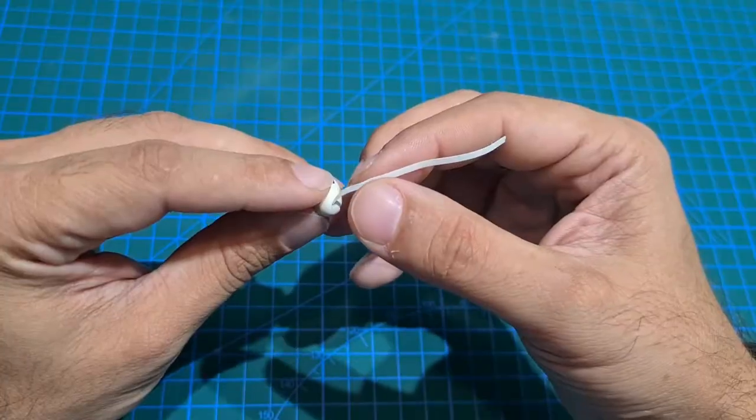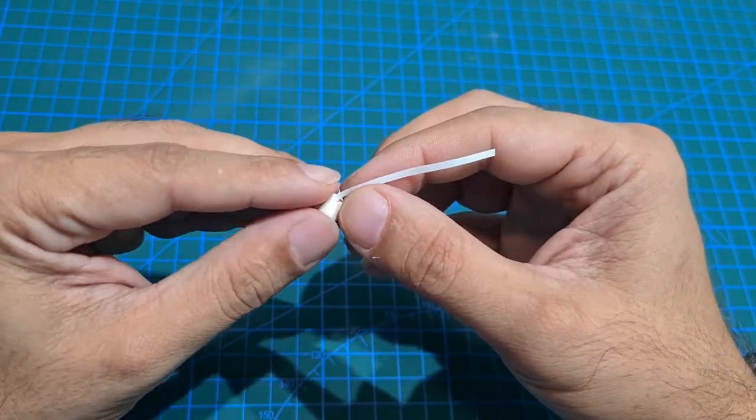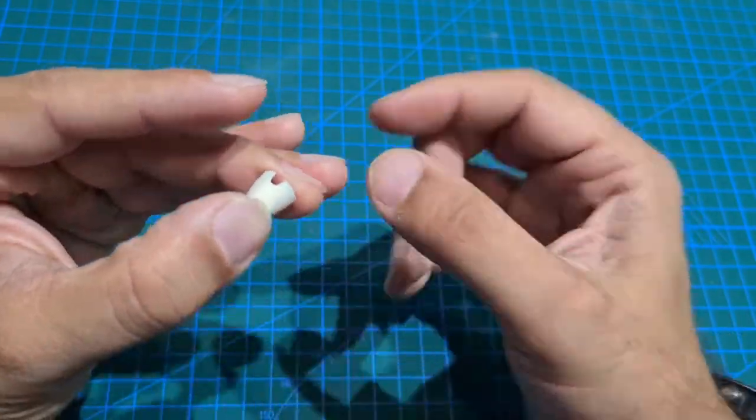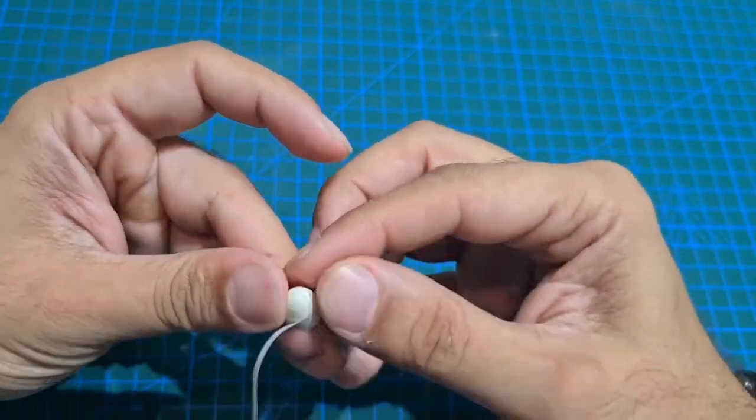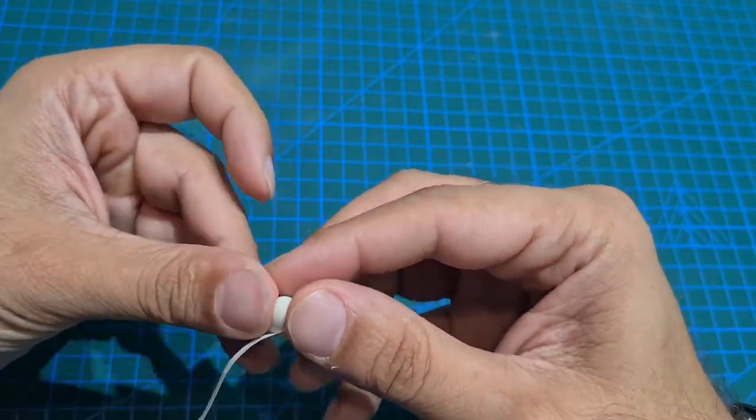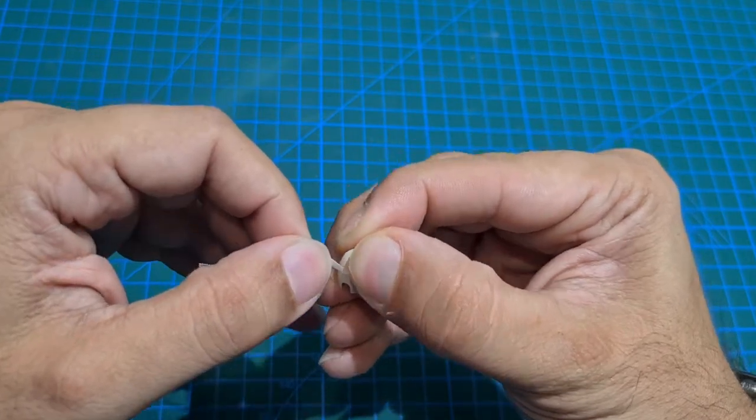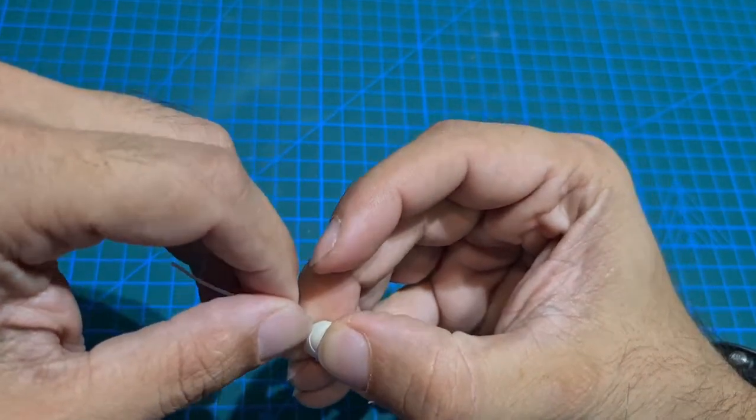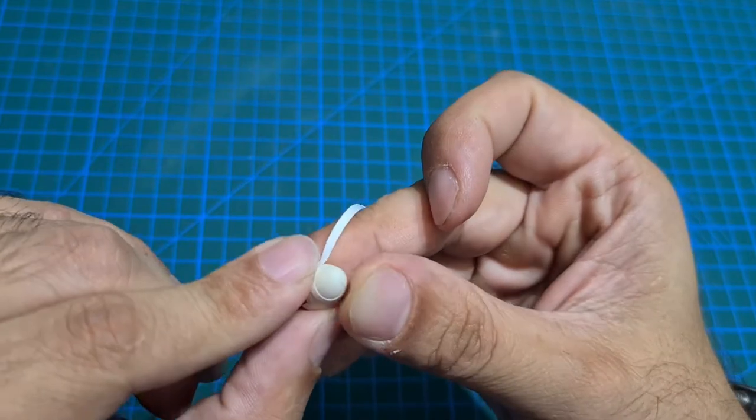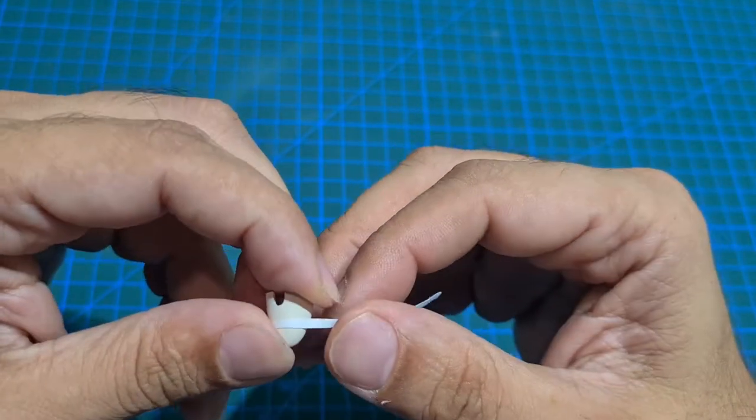Now let's get to masking the nose cone. So we start from the center. We hold it down with our thumb and then we rotate the tape around the nose cone. Now this can take quite a few attempts. This is actually my third attempt at trying to do this.